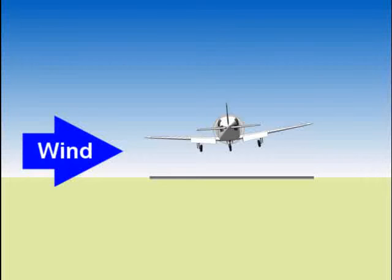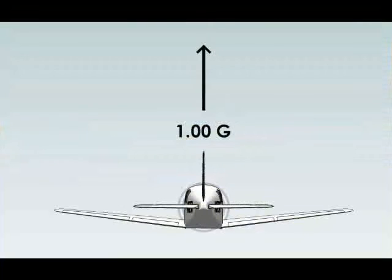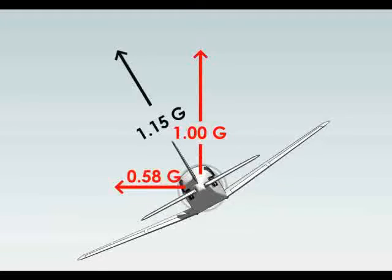First, you bank the airplane to the left. Now, you can see from this diagram that lift is perpendicular to the wings. So when you bank to the left, lift is now pulling you to the side as well as lifting the airplane up.